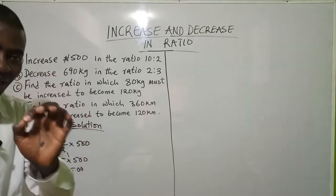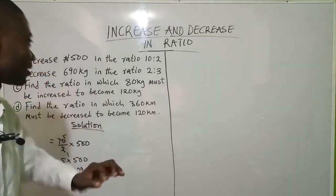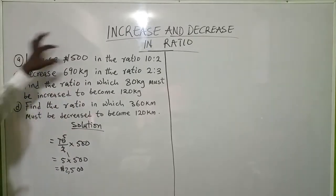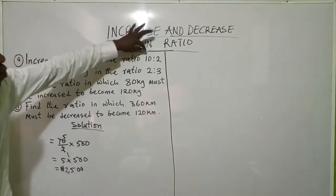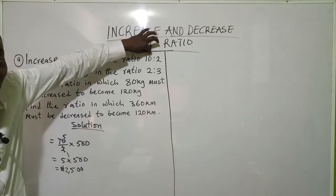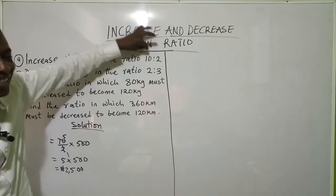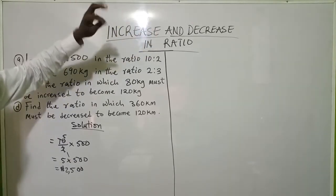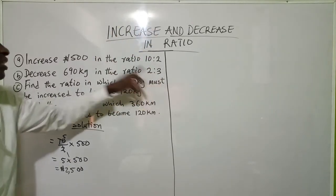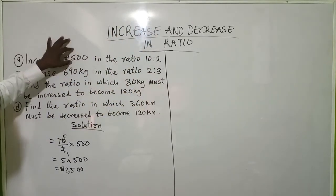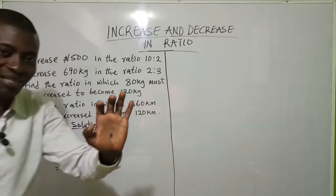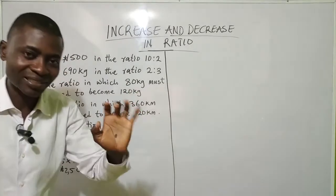The key again is this: when you are increasing, let the one that is bigger — the bigger part of the ratio — be in the numerator over the other ratio, then multiply by whatever you are increasing. That is the key.